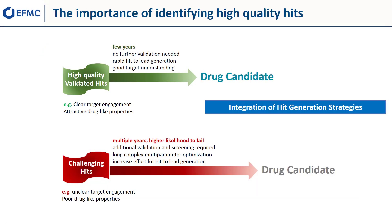Let's go back to something we already discussed in the introduction, which is the importance of identifying high quality hits to make sure that you can go fast towards a drug candidate. A high quality validated hit means a hit with a clear target engagement and attractive drug-like properties. That will allow you to skip further validation. Because of the attractive drug-like properties, the hit to lead generation will be fast and you will have a good targeting understanding. Obviously the challenging hits take longer to turn into a drug candidate or even fail. So you really have to think hard about how you design your hit generation strategy and in particular how many approaches and which approaches you want to select.